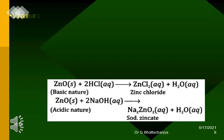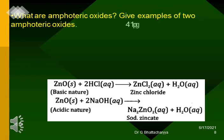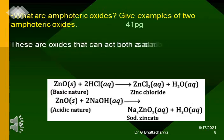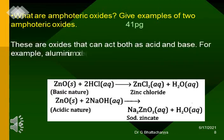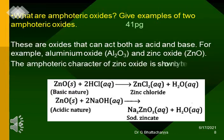What are amphoteric oxides? Give examples of two amphoteric oxides. These are oxides that can act both as acid and base. For example, aluminum oxide and zinc oxide. The amphoteric character of zinc oxide is shown by the following reactions.